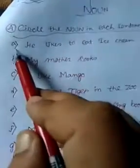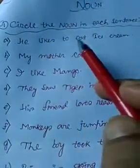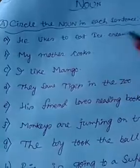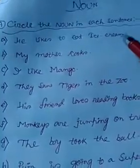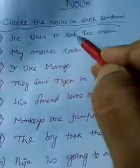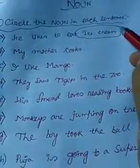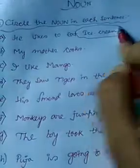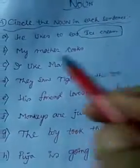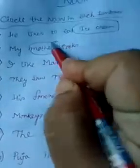A. He likes to eat ice cream. Ice cream is the naming word — the noun. B. My mother cooks. Mother is the noun.